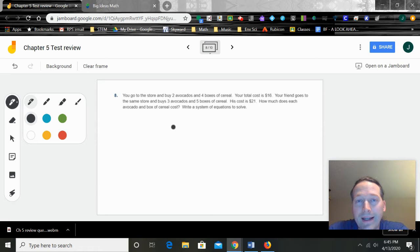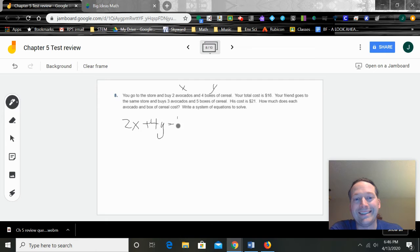He buys 3 avocados and 5 boxes of cereal. The cost is $21. How much does each avocado and box of cereal cost? Write a system of equations to solve. So if you remember when we did this last time, what you had to do is you had to choose a variable. Every system of equations we've done has a number with an x and then a number with a y, and it equals something. So what you need to do is choose a variable for the avocado and choose a variable for the box of cereal. I'm just going to do x for avocado and y for box of cereal.